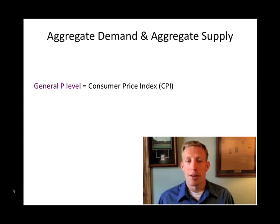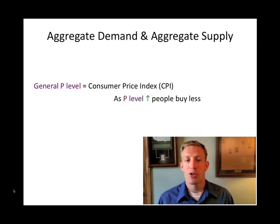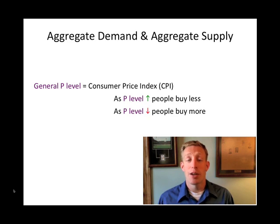When we look at aggregate demand, it behaves very much like demand in any other market — understandably, because it's made up of the demands of all these little markets. So if the price goes up, it encourages people to buy less, and if the price goes down, it encourages people to buy more. So the aggregate demand curve is downward sloping.